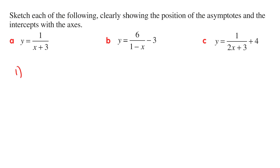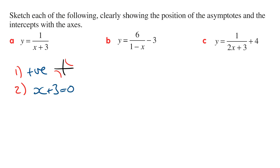Starting with the first step, we want to determine whether this is going to be a positive or a negative hyperbola. Looking at the rule, this is going to be a positive, so we know the graph is going to lie on the first and the third quadrant. For the second step, we need to work out the vertical and horizontal asymptotes. To work out the vertical asymptote, we let the denominator equal to 0 and then solve for x. If we let x plus 3 equal 0, solving for x gives x is equal to minus 3, so the vertical asymptote is the line x is equal to minus 3.